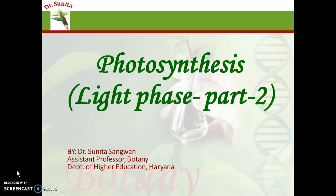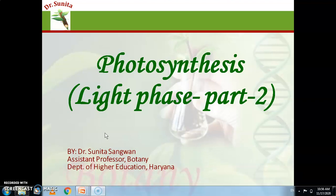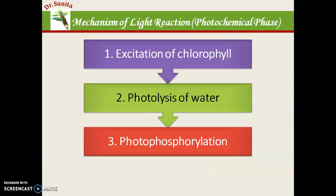Hello viewers, today we will discuss photosynthesis light phase part 2. In this part we discuss the mechanism of light reactions. There are three steps in the mechanism of light reactions: first is excitation of the chlorophyll molecule by absorbing light energy from ground state to higher state; second is photolysis of water; and third is photophosphorylation.